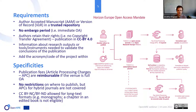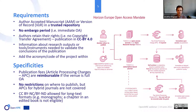Always remember to add the project acronym and grant codes in your acknowledgements, as many people forget this. You have no restrictions on where you publish — that's the biggest difference from Plan S. However, to cover open access costs, you can only claim expenses for full open access journals. If you publish in hybrid journals, you can still do so but must cover the costs yourself or go the self-archiving route.